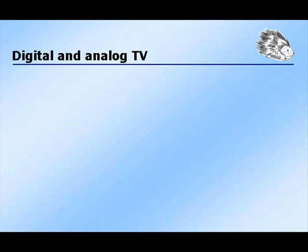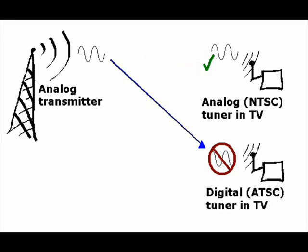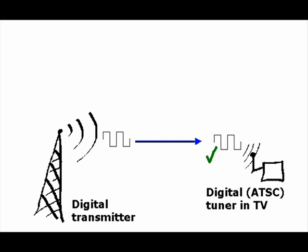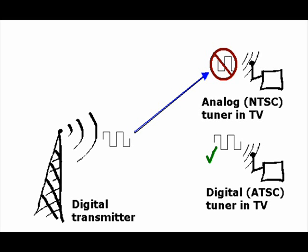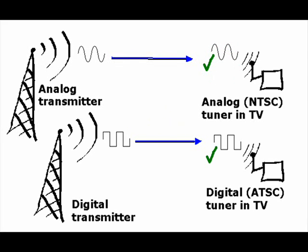What's the difference between analog and digital TV signals? TV signals that come from an analog transmission tower can only be received by televisions that have an analog tuner. A digital television cannot receive analog TV signals. By the same token, only a digital TV can receive TV signals that come from a digital TV transmission tower. An analog TV cannot receive digital TV signals. Analog TV signals are for analog TVs and digital TV signals are for digital TVs.